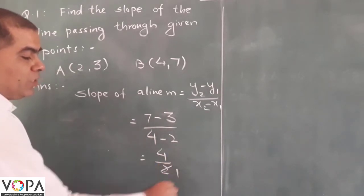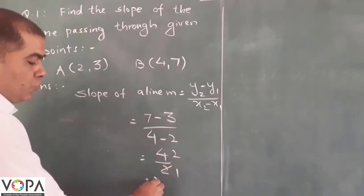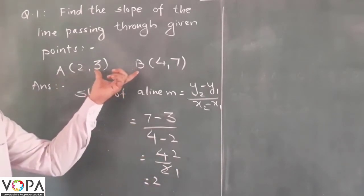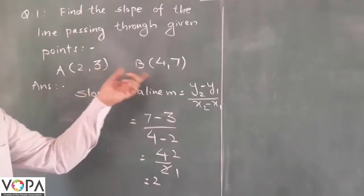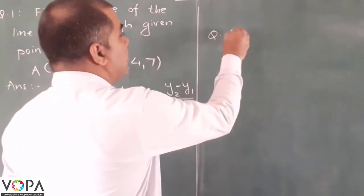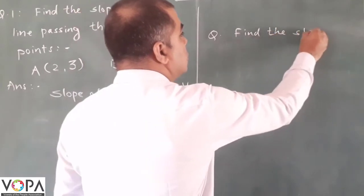Now, 4 upon 2 equals 2. This is the slope of the line passing through points A and B. Now take the second question: find the slope of a line making angle 60 degrees with the x-axis.